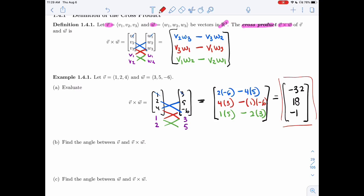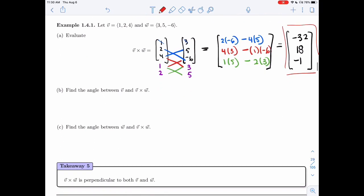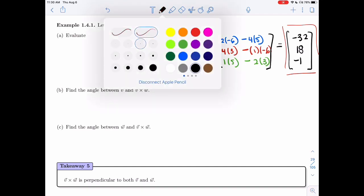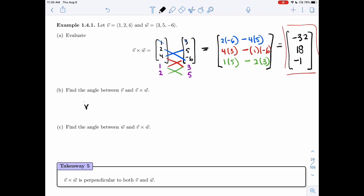It's not clear at this point why this is helpful, but let's do part B. I want to find the angle between V and V cross W. So I'm going to start by taking the dot product. V dot V cross W. I found both already. So I have 1, 2, 4 dotted with minus 32, 18, minus 1. So I get minus 32 plus 36 minus 4. I get 0. That means the angle is 90 degrees. They're perpendicular. So V is perpendicular to V cross W.